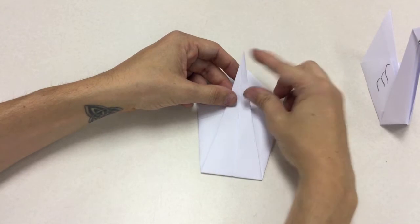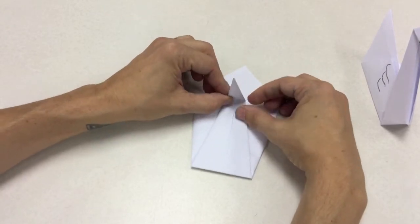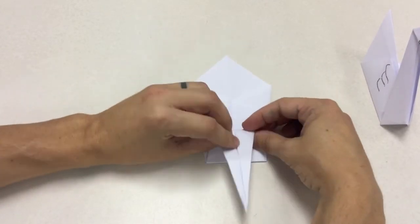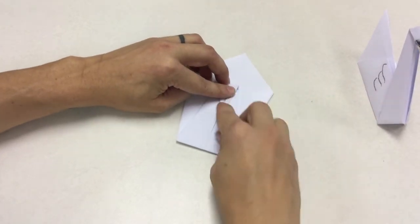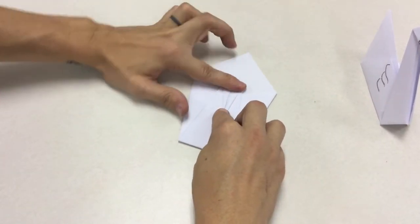This part right here is going to be the head. So what I'm going to do is bend this part down. You don't need to bend it down super far. Just this top part right here. Just like that. Crease it. It's getting thick.